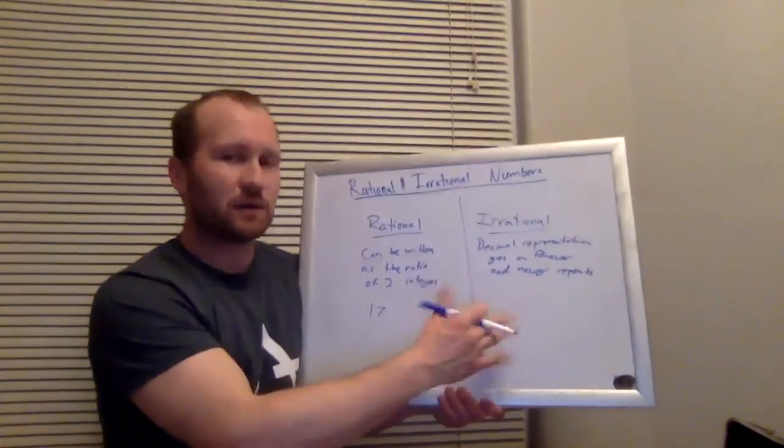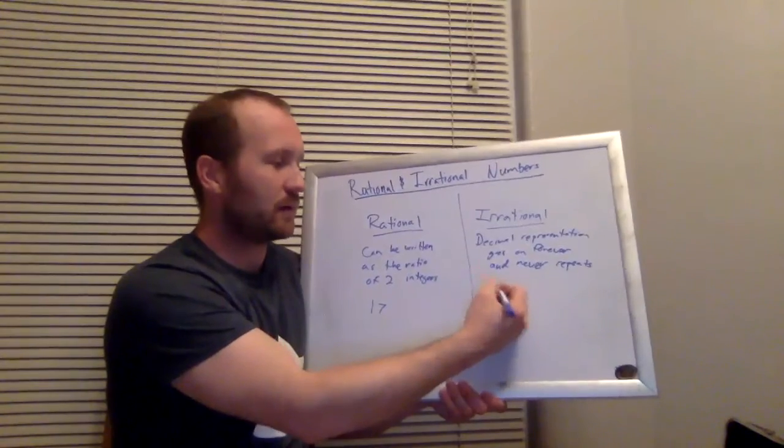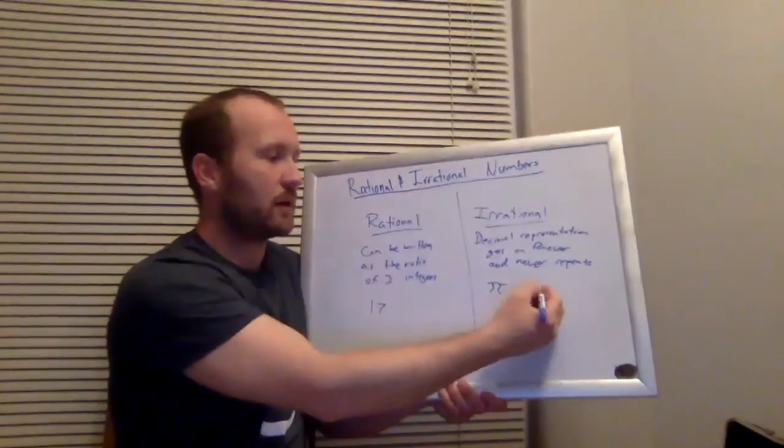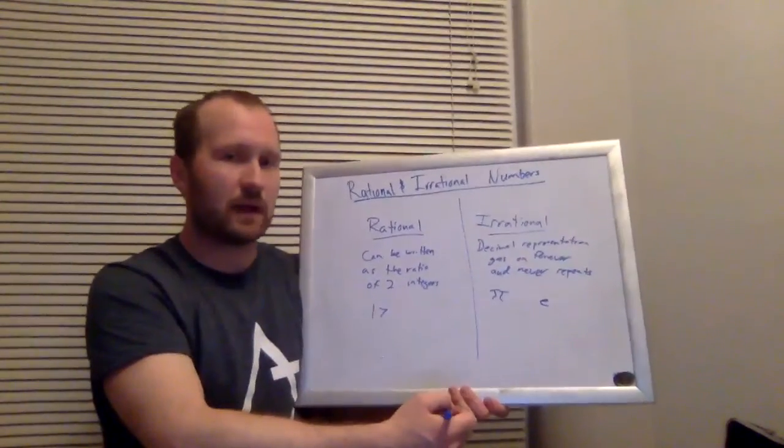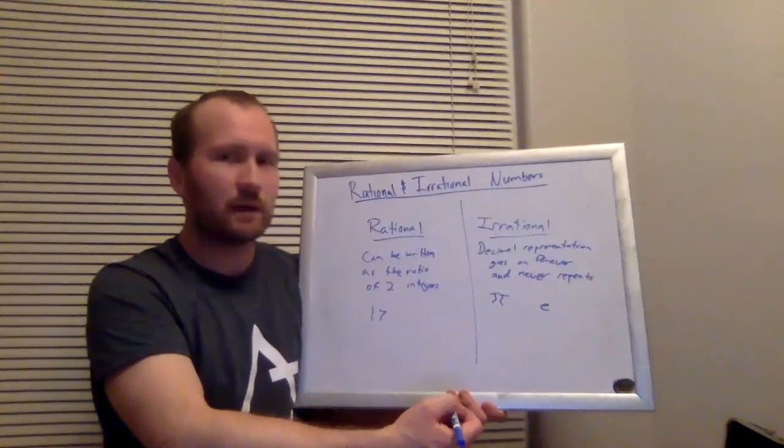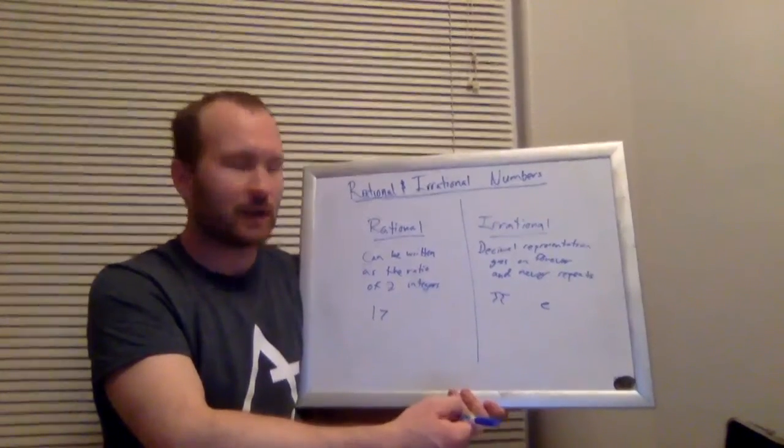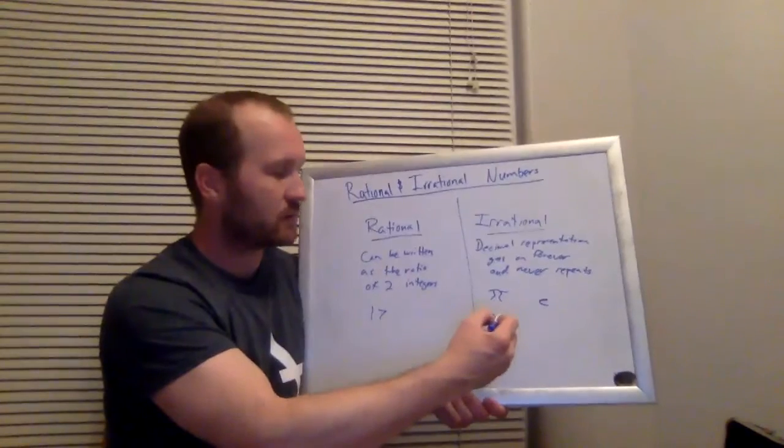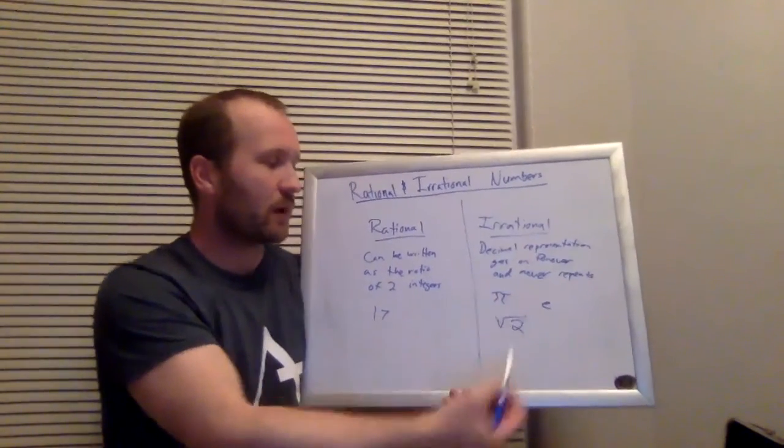Now, common irrational numbers include numbers that are given symbols like pi or e, numbers like that. And they also include something that we were just looking at last week, which is the square roots. Many square roots are irrational numbers.